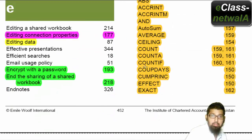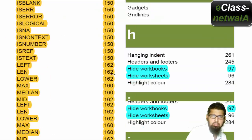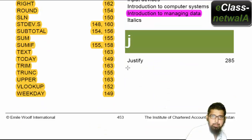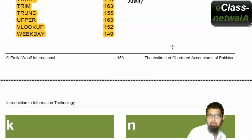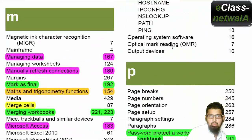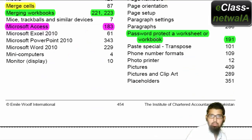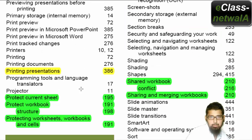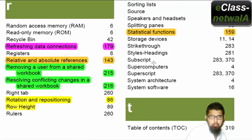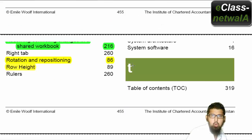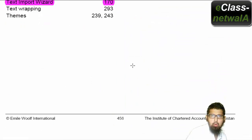We have read the original signature with the passports and the sharing of our shared workbook. After that, we have mark as final, margin workbook, password protector, worksheet and workbook. We have shared workbook, conflict sharing and merging workbook, remove a user from a shared workbook, and resolving conflict change in a shared workbook.